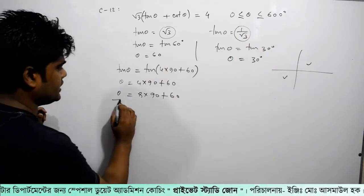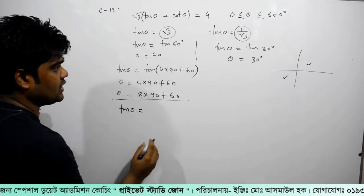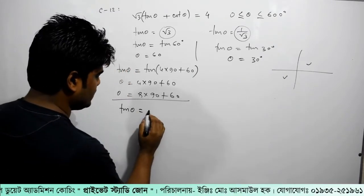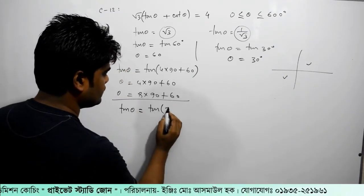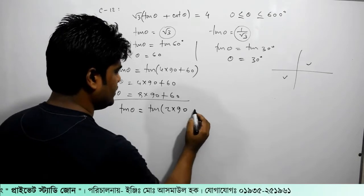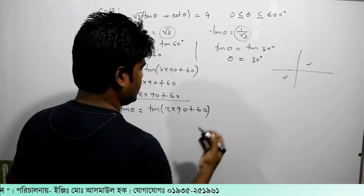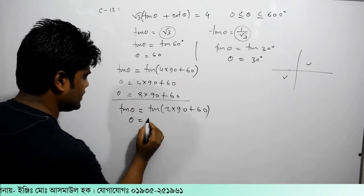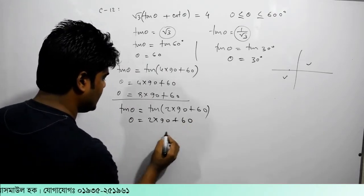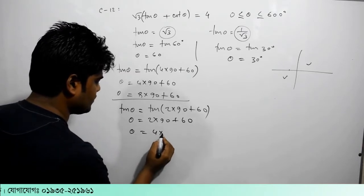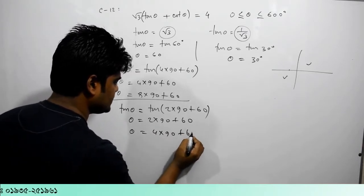So, let's see, here we are going to write tan theta 1. So, what do we do? Tan 2 minus 90 plus 6. 1 minus 90 plus 1. So, I will write theta 2 minus 90 plus 6. Theta 4 minus 90 plus 6.